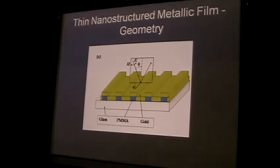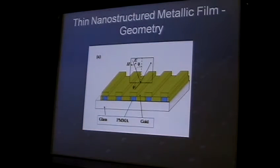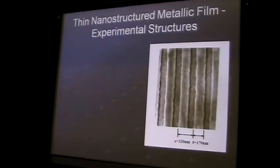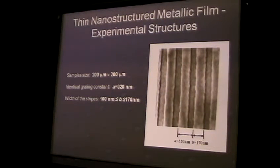That's where gold nanostructures come into play. By playing with geometry, we can create effective media with almost any N and K we like. We made this structure on glass with a PMMA mask, producing arrays of lines. The gradient constant is still 320 nm, and the width of the stripes varies from 100 to 117 nanometers. The whole structure is about 200 microns - almost big enough to see by the naked eye.